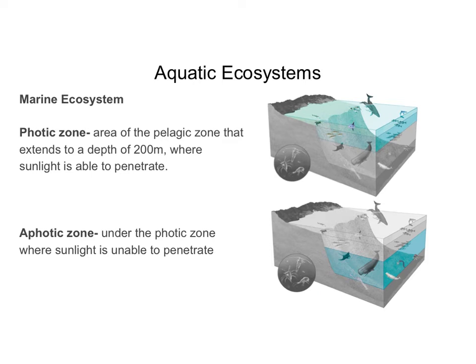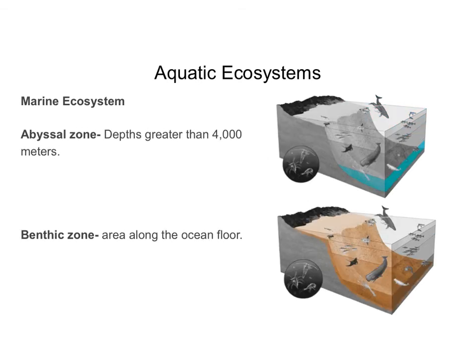Just like lakes and ponds, the marine ecosystem has additional zones. The photic zone is where sunlight is able to penetrate. The aphotic zone is where no sunlight is able to penetrate. The abyssal zone is anything deeper than 4,000 meters — way at the bottom — and it is part of the aphotic zone. Not a lot of species live there because it is so deep and dark. The benthic zone is the area right along the ocean floor.